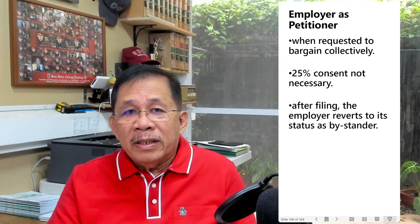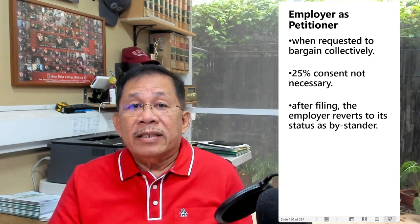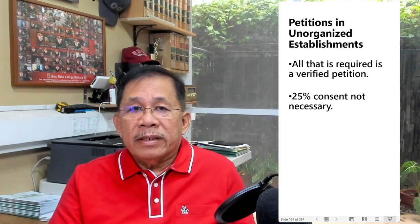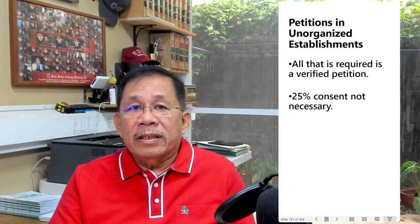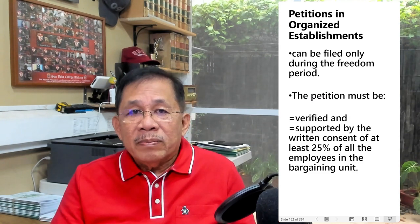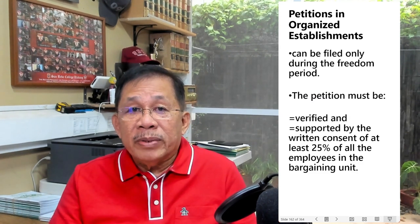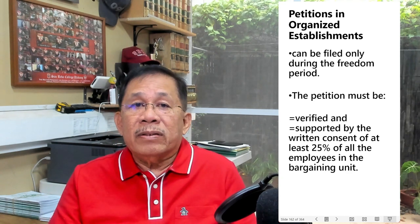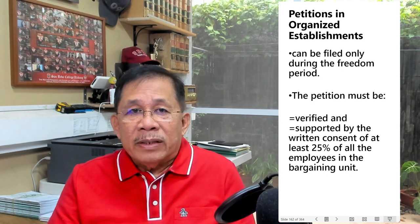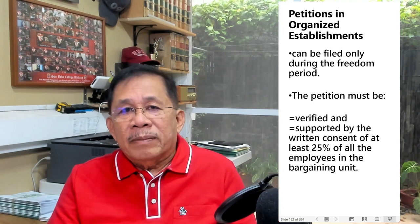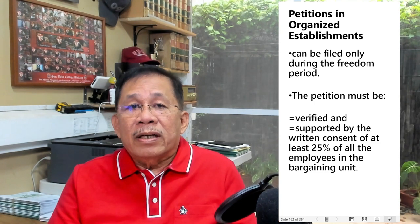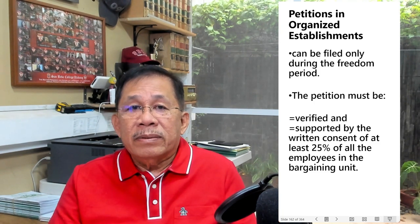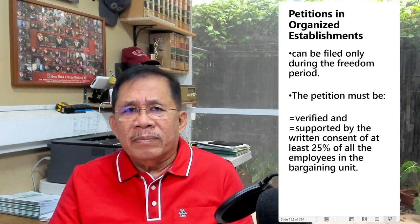Regarding petitions in unorganized establishments, all that is required is a verified petition and the 25% consent is not necessary. But in organized establishments, the petition can be filed only during the freedom period, and it must be verified and supported by the written consent of 25% of the employees in the bargaining unit. The 25% is needed to show that the petitioning union represents a group of employees with substantial interest in the election. However, this 25% consent need not be established with mathematical precision — substantial compliance will suffice.